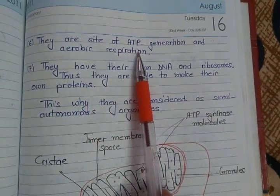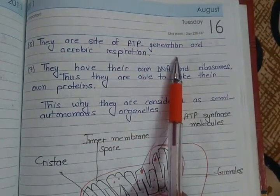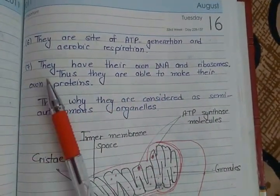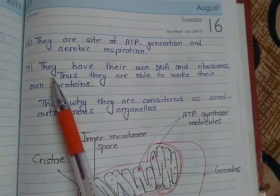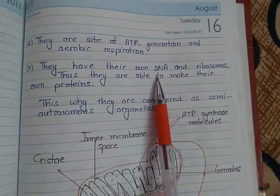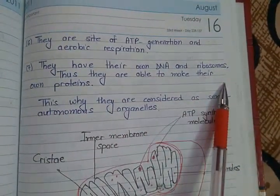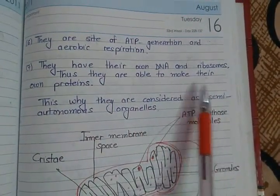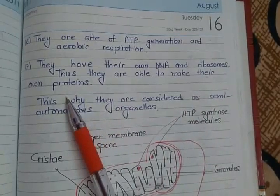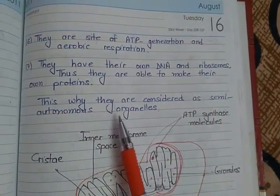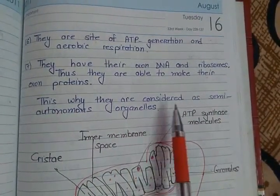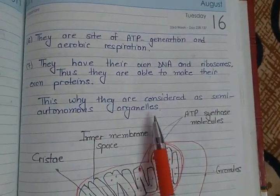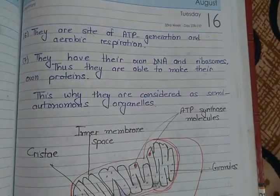Mitochondria are the site of ATP generation and aerobic respiration. They have their own DNA and ribosomes, so they are able to make their own proteins. This is why they are considered semi-autonomous organelles.